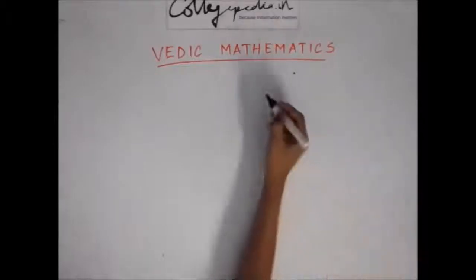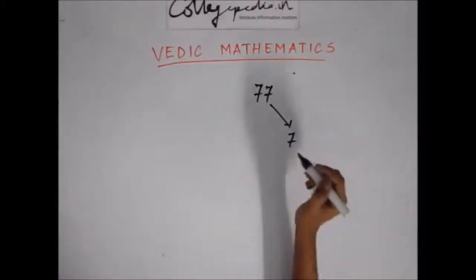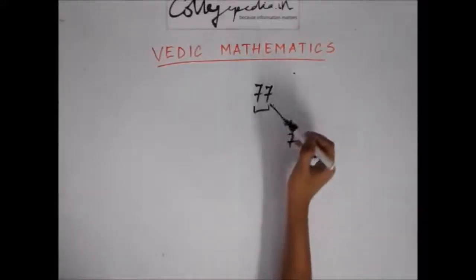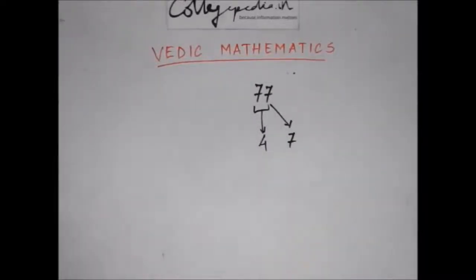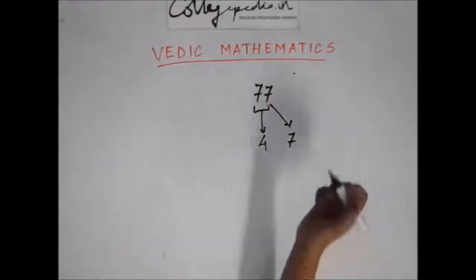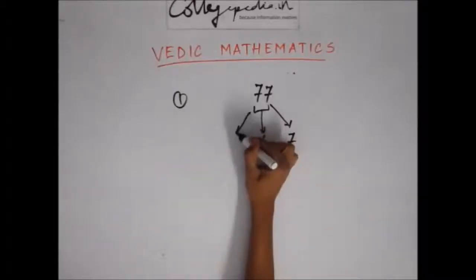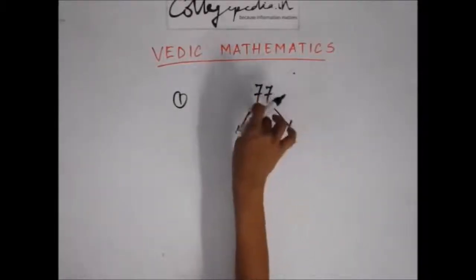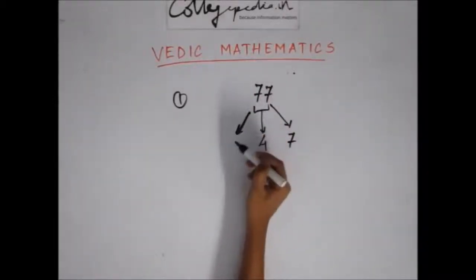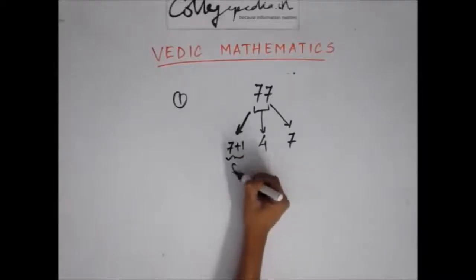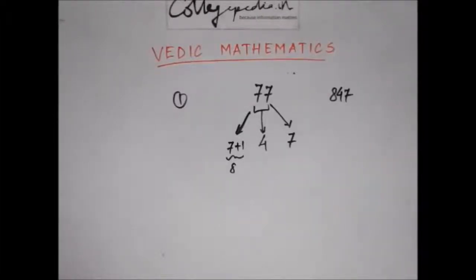Let's take 77. I add the two digits: 7+7=14. Since the sum is 14, there's a carry. I can't write 14 in between, so I keep the carry of 1. For the last digit, since there are no more combinations, I take the digit as it is and add the carry. So 7+1=8. My answer is 847.